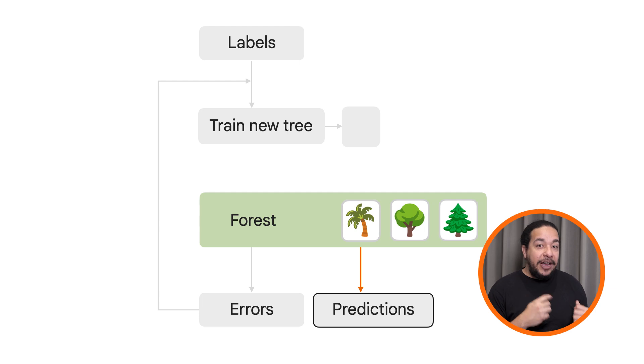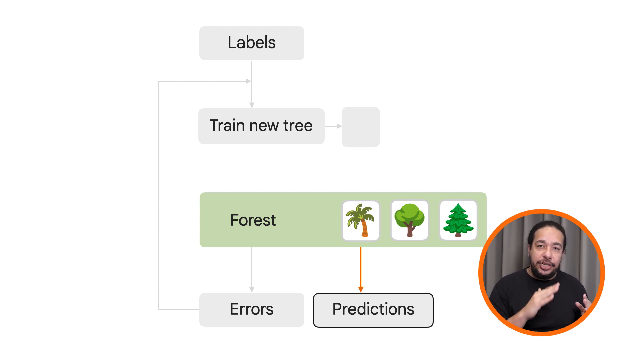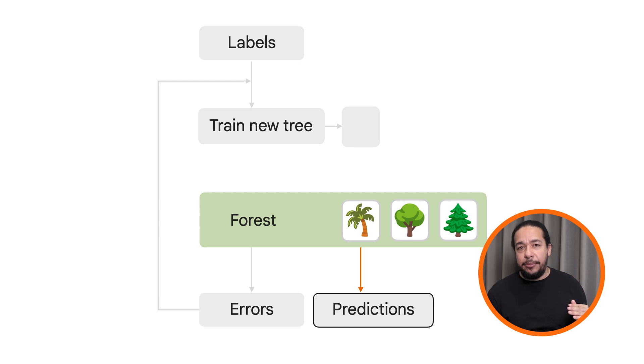The final prediction is made by combining the predictions of all the trees in the ensemble.